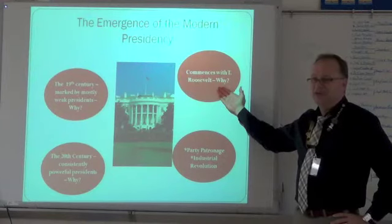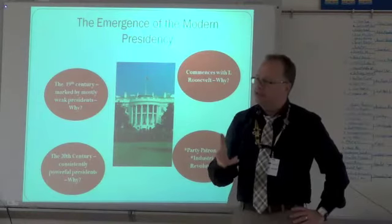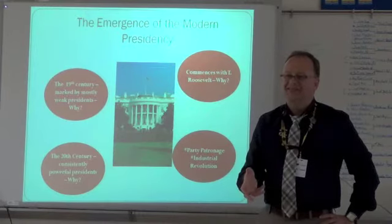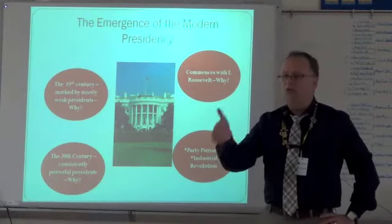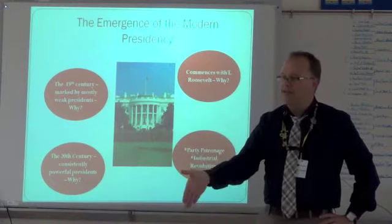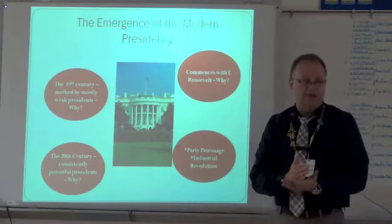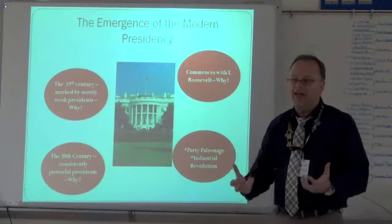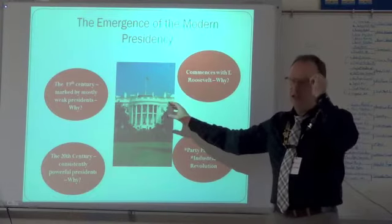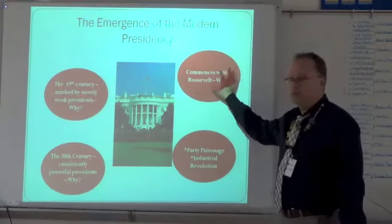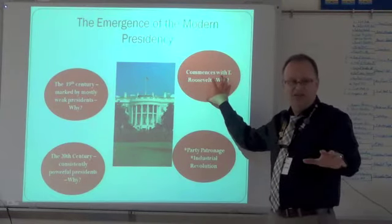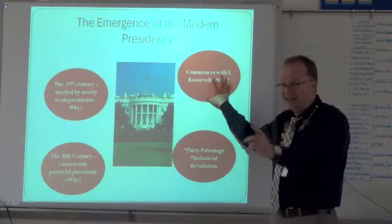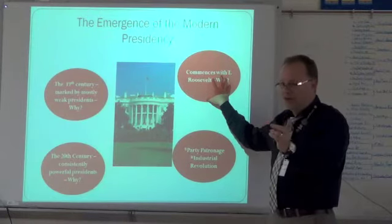Teddy Roosevelt had been police commissioner of New York City, where Jacob Riis took him out and showed him how immigrants lived in slums — the deplorable conditions. This apparently made him far more socially conscious than any president before him. The political bosses had put him in the vice presidency to sideline him, so he owed them nothing. Then an assassin's bullet put him in the White House — William McKinley was assassinated — and Theodore Roosevelt, their worst nightmare, became president. Everything changed from that point on.